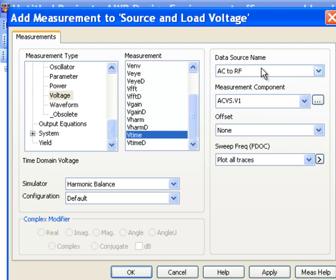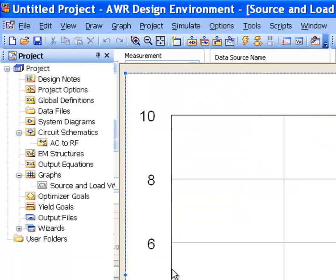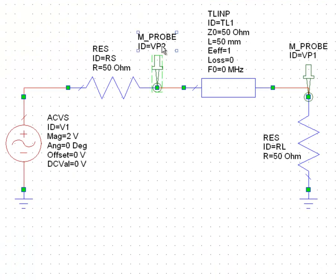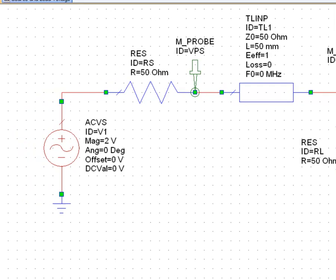Now where is this measurement going to be taken? The data source name is correct, it's the only one schematic we've got. The measurement component will have to be either VP1 or VP2. Now we want to make sure that we know which one it is that we're using. So what we can do is go back to our schematic and change the names of our probes, which is a good practice so you know more or less where you are when you go and set up a graph. So VPS will be our source and VPL will be our load, so we know exactly what we're looking at.